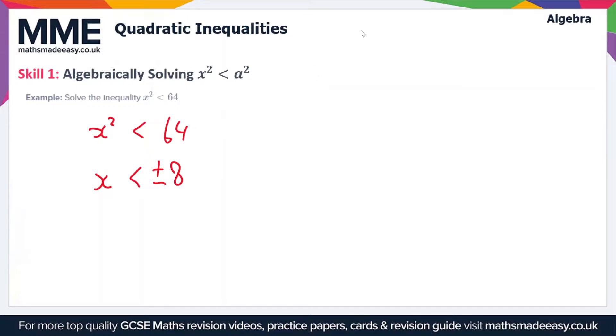Now why is this? Well if we have 8 squared that's obviously equal to 64, but if we have minus 8 and we square it then this is going to be equal to minus 8 times minus 8 which is also equal to 64, that's because a minus number times a minus number is equal to a positive number.